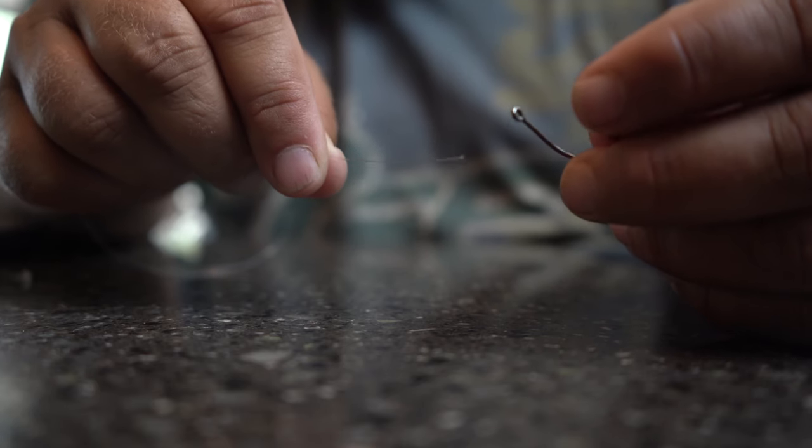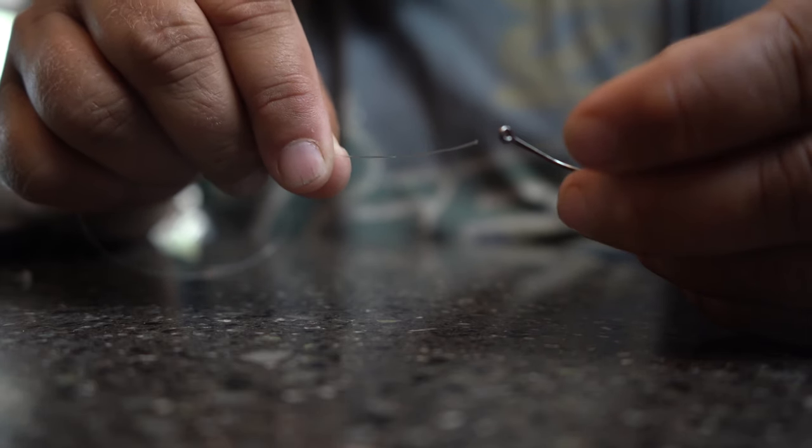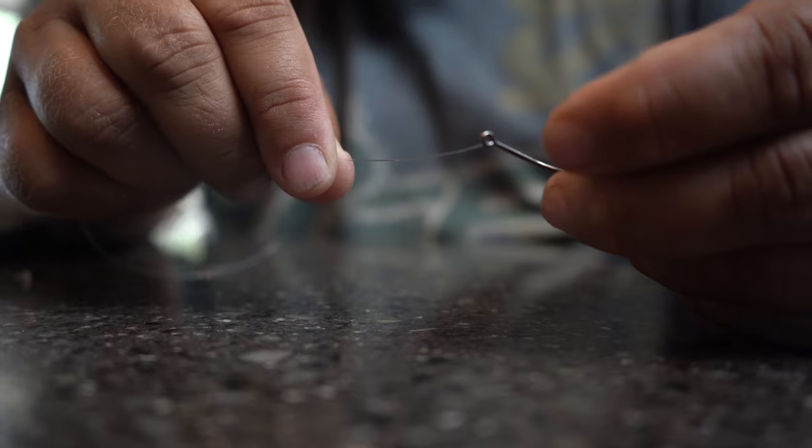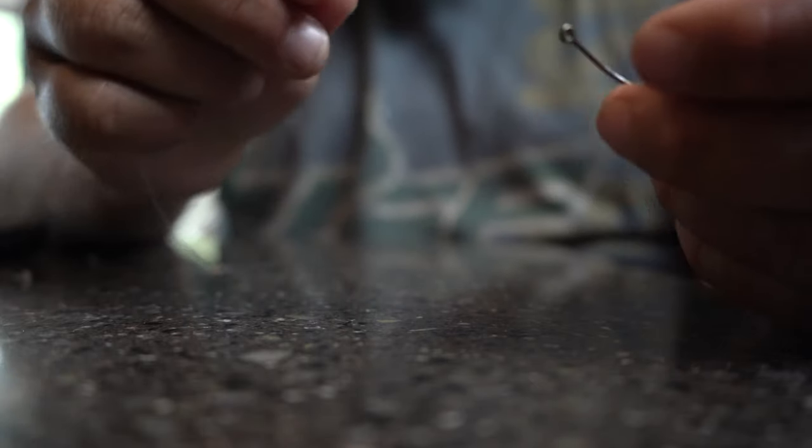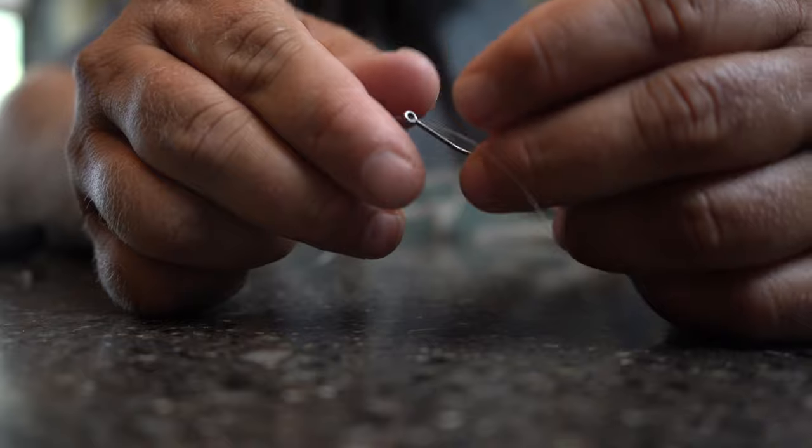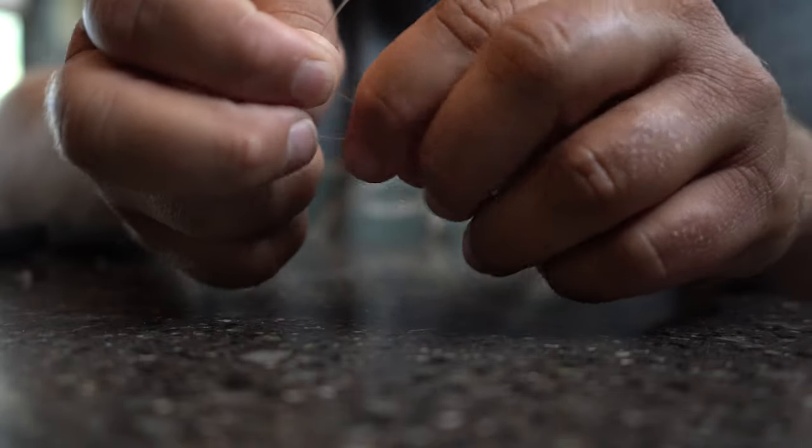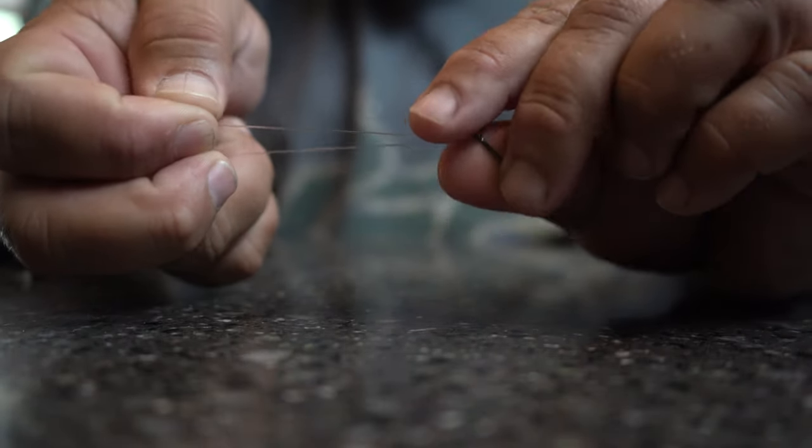But here it is. What you're going to want to do is take the tag end of the hook, of the line, and put it through the end of the hook just like this. You want to pull about two or three inches of it.